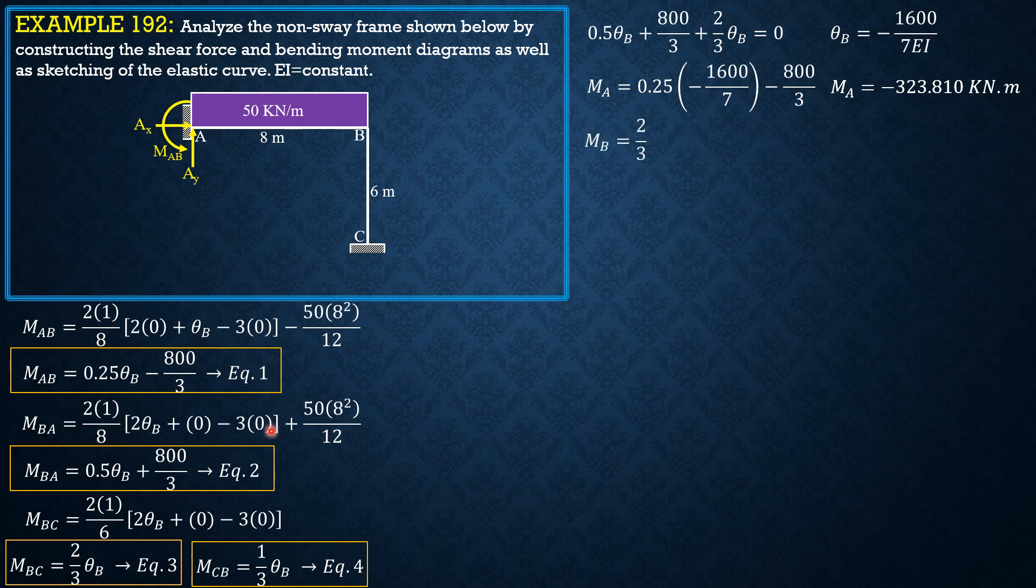MBA, or MB, which is MBC, is two-thirds of θB. So MBA is MB negative 152.381, meaning MBA is positive 152.381.